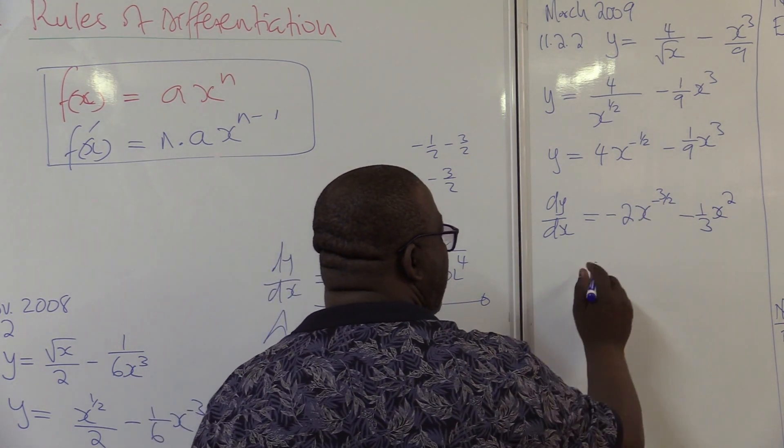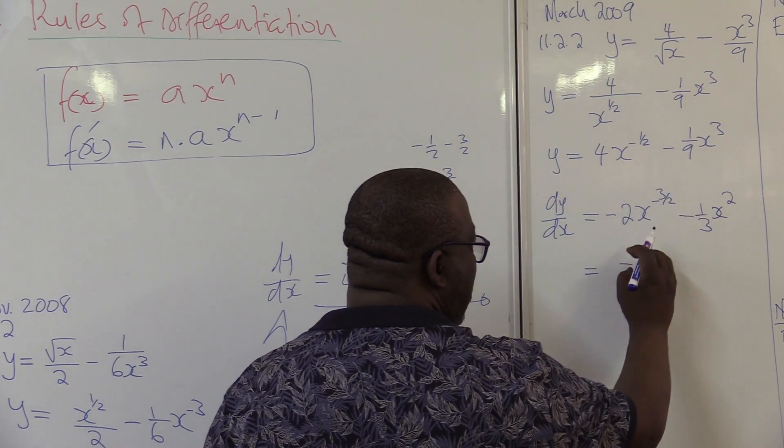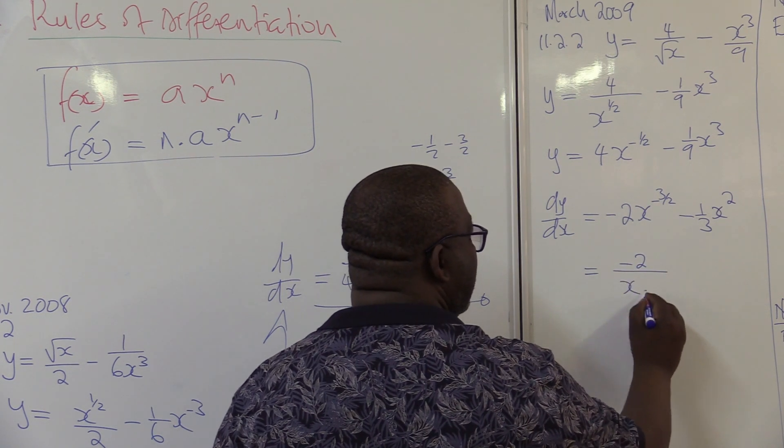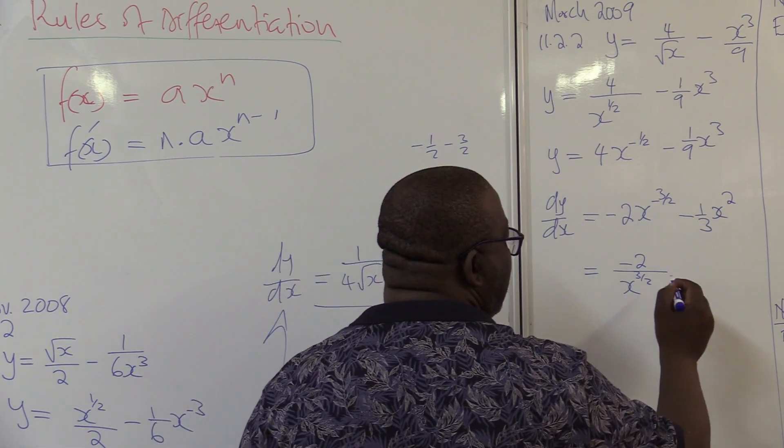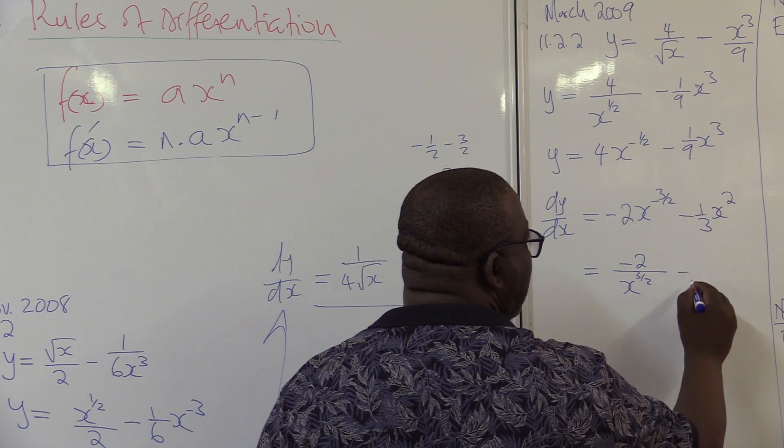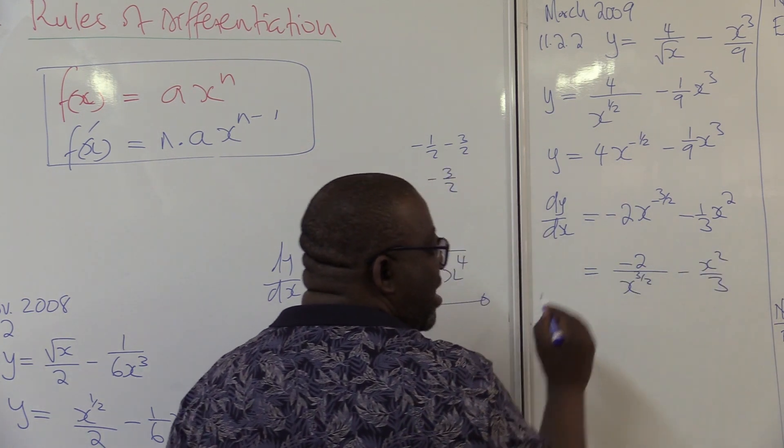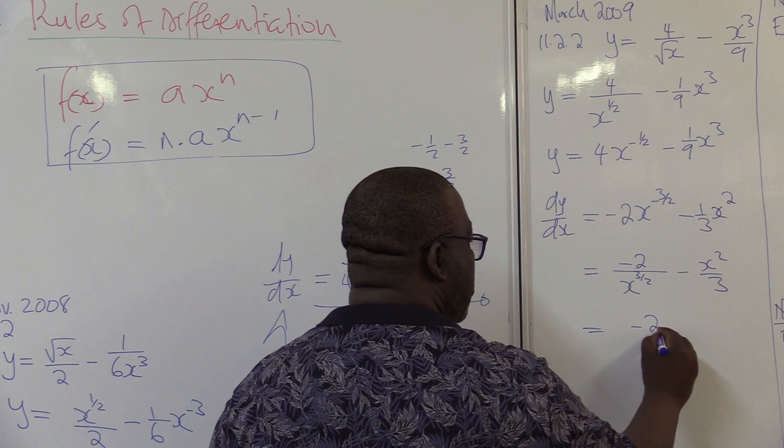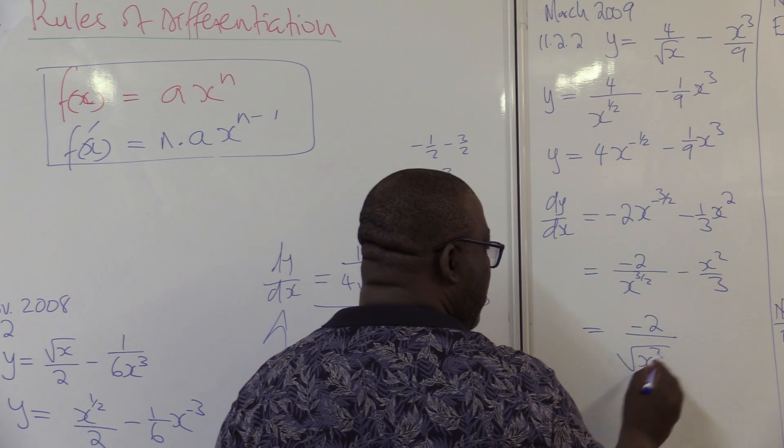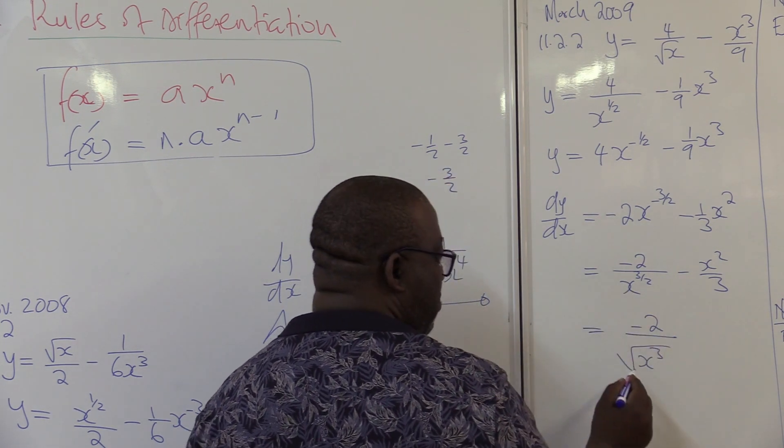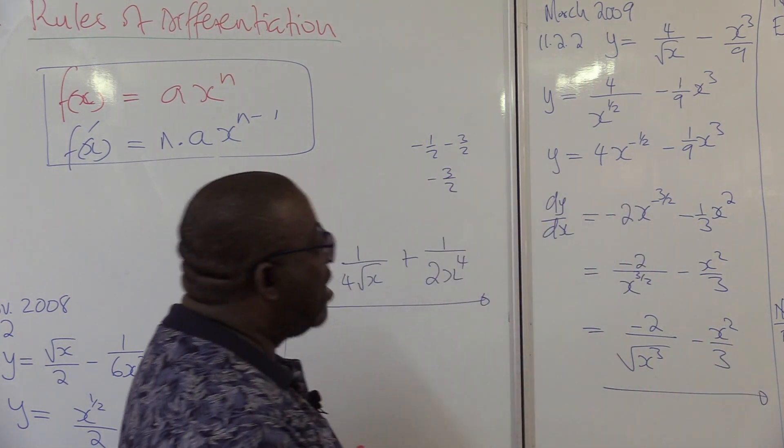I want us to clean this one to be positive. This then will be, we've got minus 2 on top. If we take this thing down, it will be over x to the power positive 3 over 2. This is exactly as it is. It is minus x squared over 3. Let me just clean this one further. This would be minus 2 over, this is square root of x cubed. Remember there was 2 here divided there. I'm taking it back. This is minus x squared over 3. This is dy dx in that form.